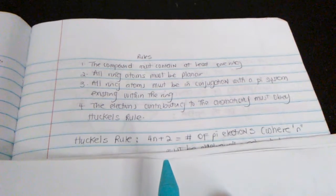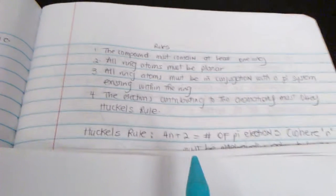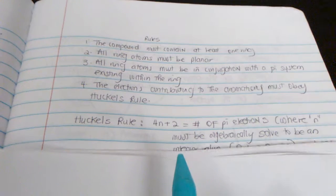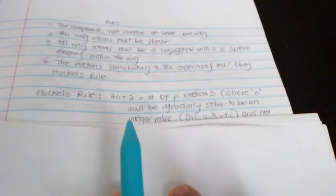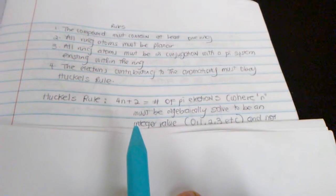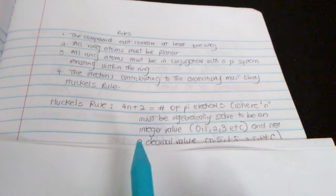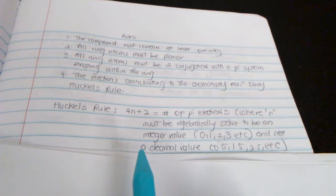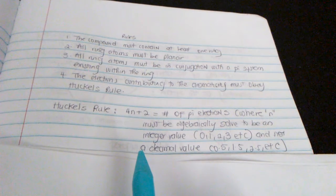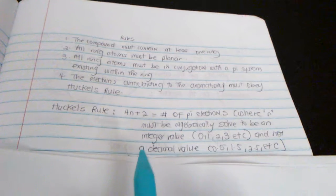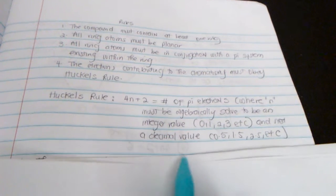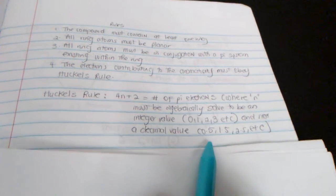Hückel's rule is 4n + 2. When you solve for n, n should equal an integer value: 0, 1, 2, 3. It should not be a decimal value like 0.5 or 1.5. I'll show you examples of this.